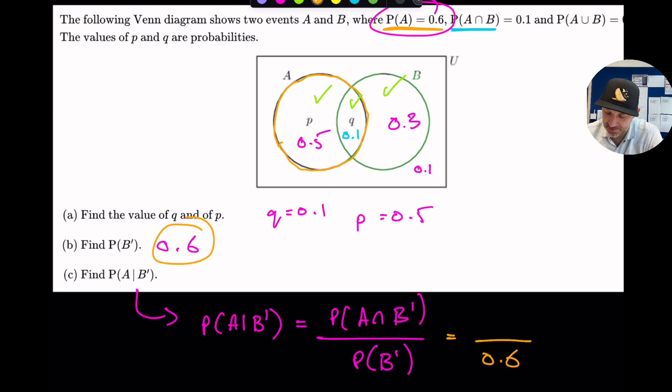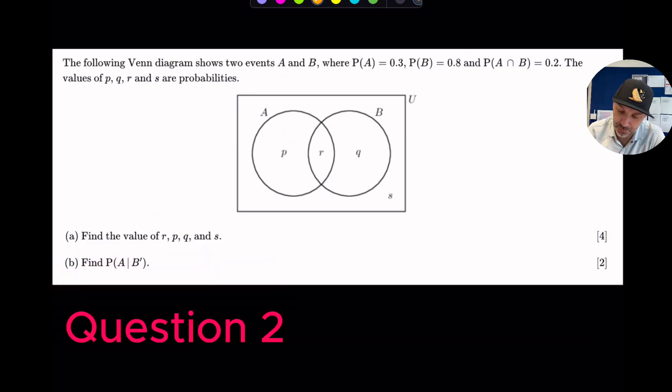And what is the probability of A and not B? Okay. The probability of A and not B is 0.5. So 0.5 divided by 0.6 will be the same as 5 over 6 if we're leaving it as an exact value. We'll just go through it.